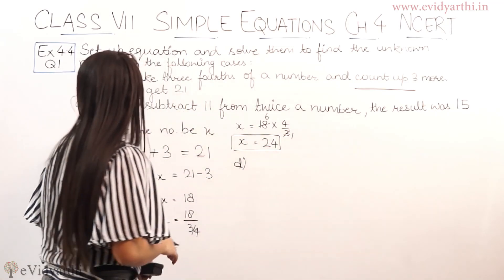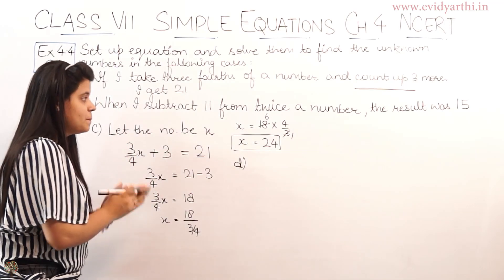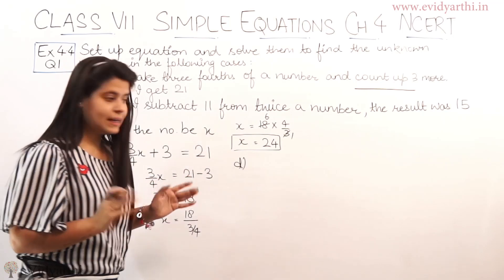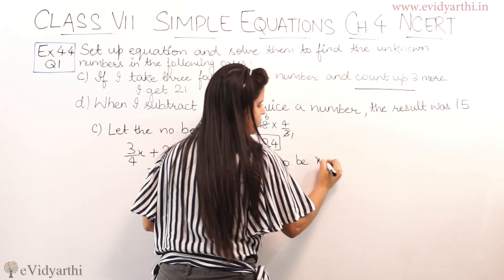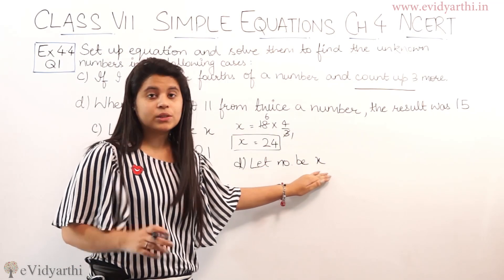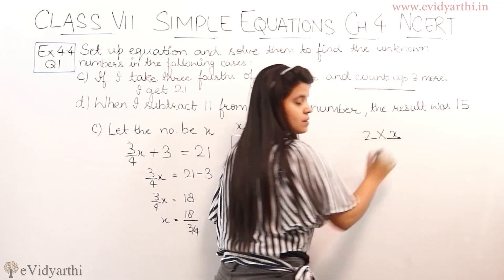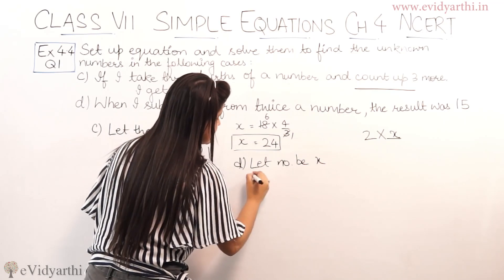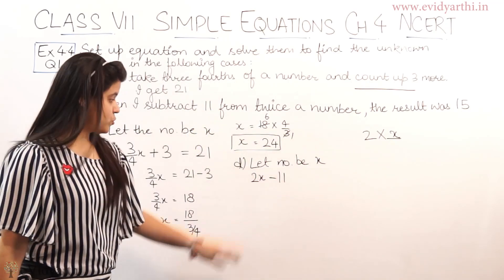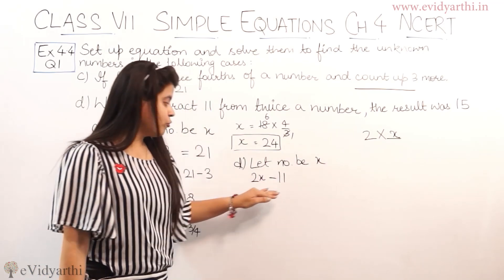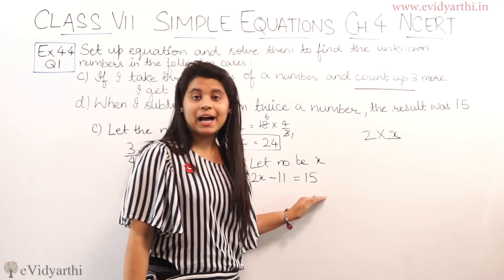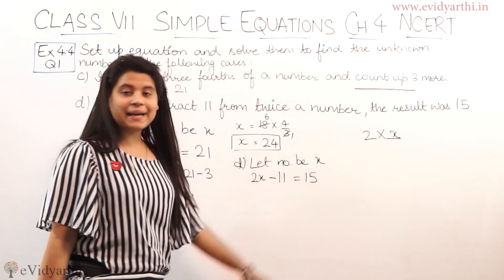Now part D: when I subtract 11 from twice a number, the result is 15. Number nahi given, so let the number be x. Twice a number means 2 times x, which is 2x. Subtract 11 from 2x: the result is 15. So the equation is 2x − 11 = 15.